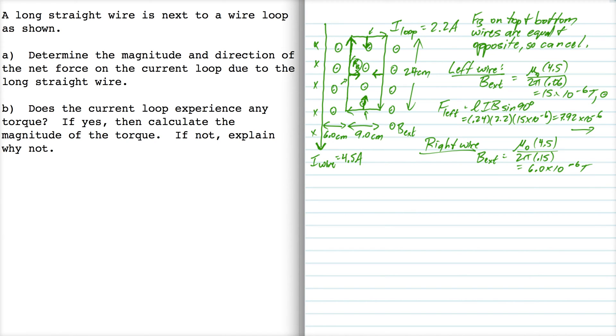It's directed out of the page, just like the magnetic field on the left wire. And so the force acting on the right hand wire is LIB sin 90.